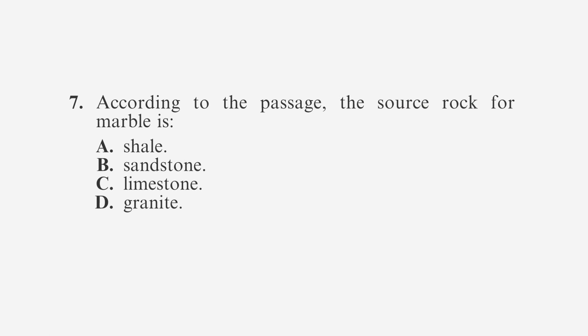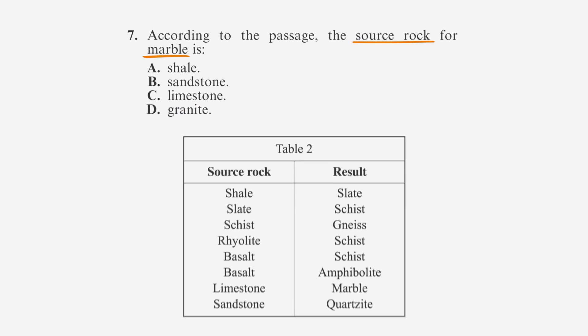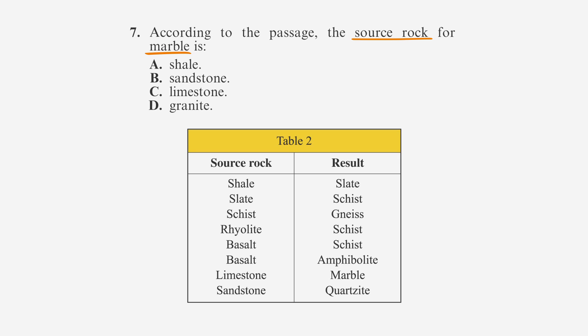The first question states, according to the passage, the source rock for marble is: a) shale, b) sandstone, c) limestone, or d) granite. Skimming the tables, we see that the source rock is in table two. Then look for marble in table two to find its corresponding source rock, which is limestone. Choice C, we have our answer.